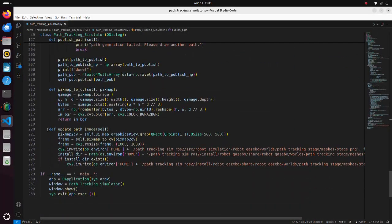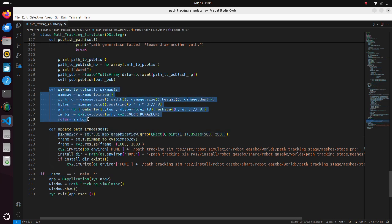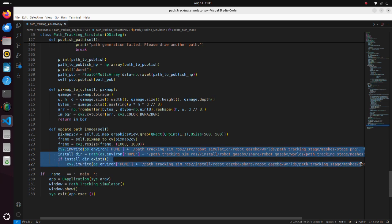In the updatePathImage function, we are grabbing an image inside the map graphic scene, converting it to a NumPy array. Then, we save it into the source and the install directories. Note that when we launch Gazebo, the image will be read from the install directory, not the source directory.